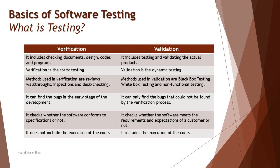Verification can find bugs early in the software development lifecycle — during design and requirement phases — because finding a defect early is cheaper to resolve since you haven't built a full system on that basis. Validation finds bugs that could not be found by verification — defects discovered by actually interacting with the system. Verification checks whether software conforms to its specification; validation checks whether software meets the requirements and expectations of the customer. Verification does not include execution of code; validation deals with practical execution and interaction.